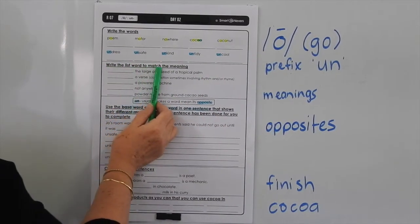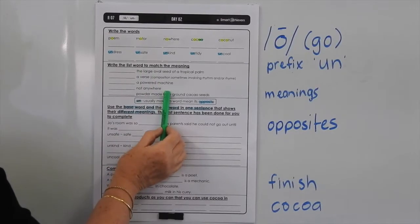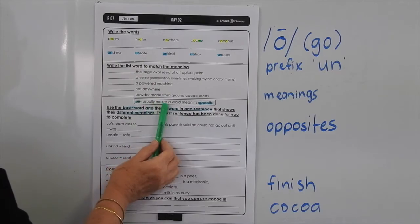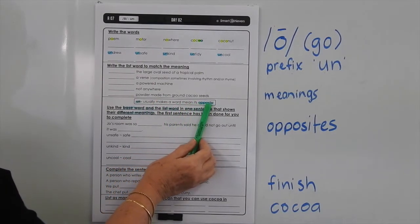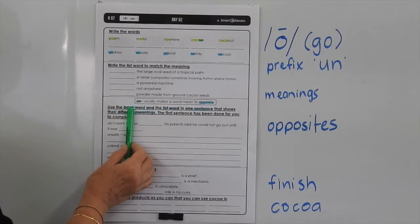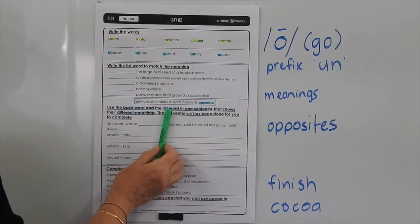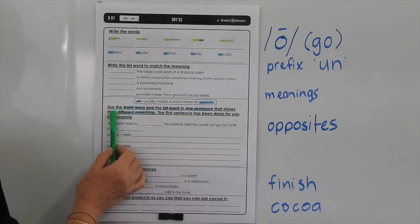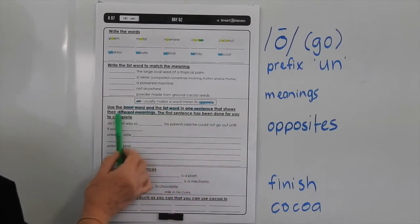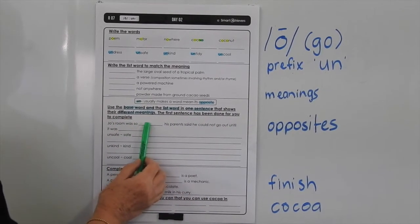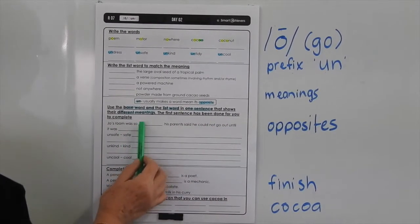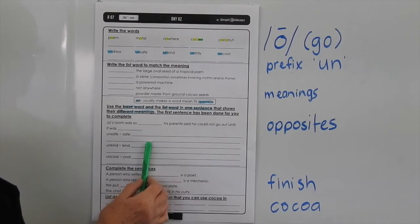The big thing is you have to recognise that prefixes generally change the meaning of the base word. Down here you have to write the words to match the meanings. It tells you un usually makes a word mean its opposite. Use the base word and the list word in one sentence that shows their different meanings. The first sentence has been done for you to complete: Joe's room was so... his parents said he could not go out until it was.